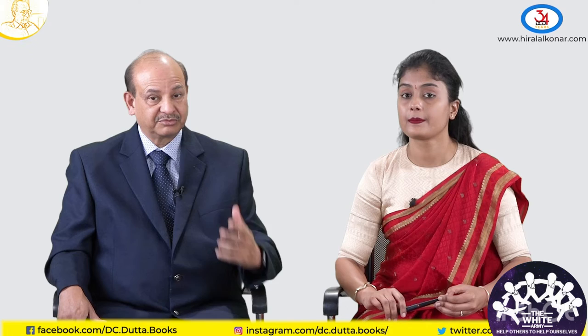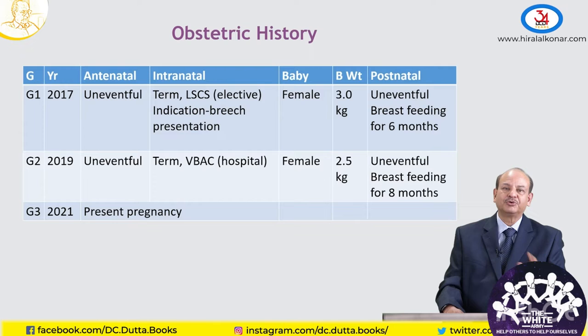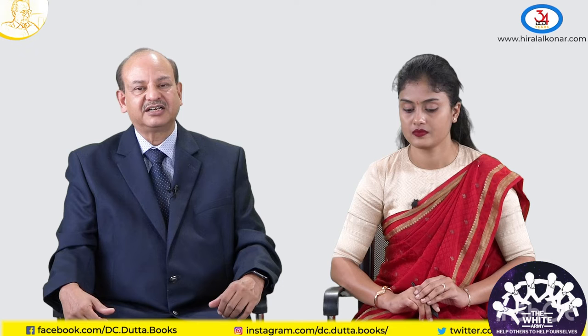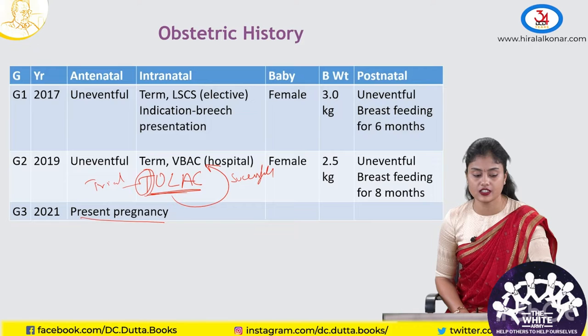I would like students to notice that this lady has had a vaginal delivery after caesarean already. There are mnemonics related to post-caesarean pregnancy. TOLAC means trial of labour after caesarean — we use this term when planning for vaginal delivery in a post-caesarean pregnancy. If this trial is successful, it is called VBAC — vaginal birth after caesarean. In this case, she has had a vaginal birth after her previous caesarean delivery. This is her third pregnancy in the year 2021.